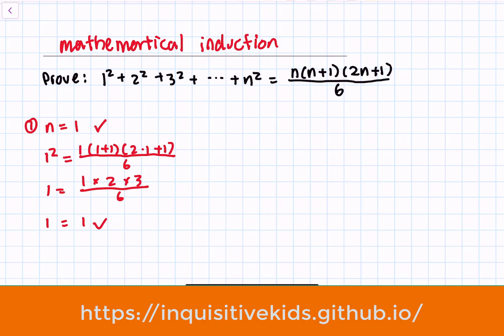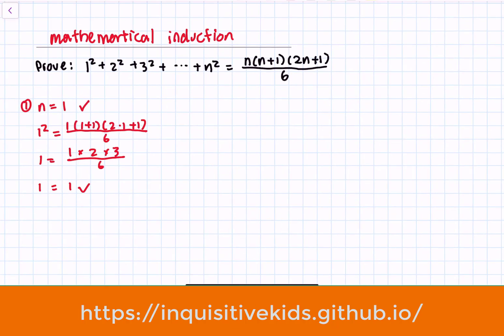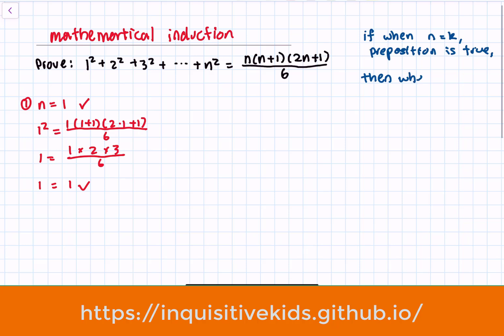So we know that for the special case n=1, this equation is true. We could keep testing when n equals 2, 3, and so on, but there must be a faster way — and this is where mathematical induction comes in. The logic of mathematical induction is: if when n equals 1 this proposition is true, and when n equals k this proposition is true, then when n equals k+1 this proposition is also true.